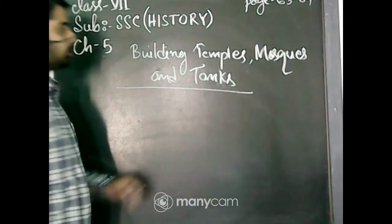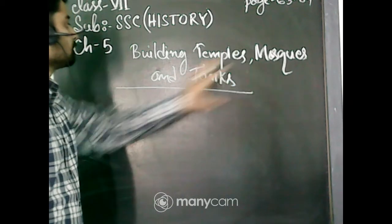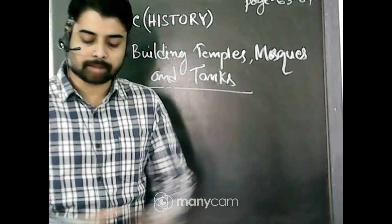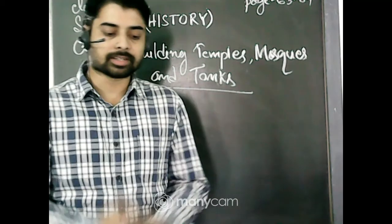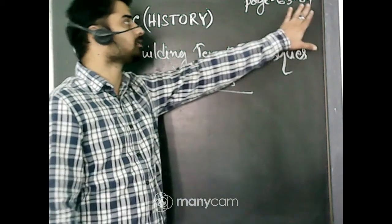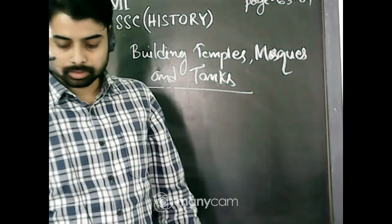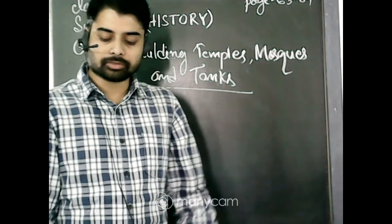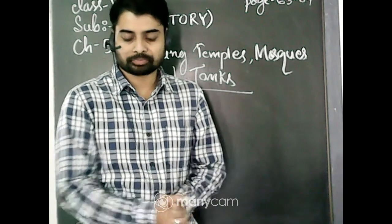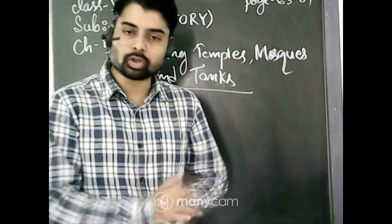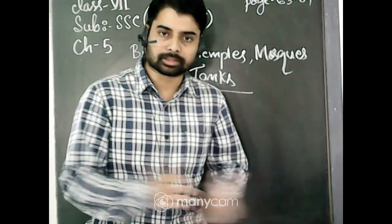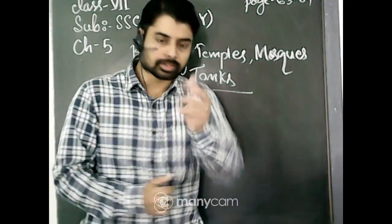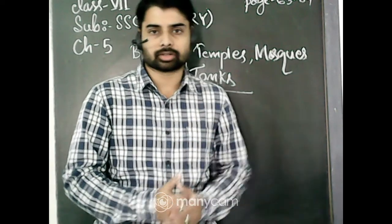At that time, why did the king build temples, mosques and tanks? The temples and mosques are beautifully constructed because they were places of worship — it is on page numbers 63 and 64 of your history book, chapter 5. They were also meant to demonstrate their power, wealth, and devotion towards their patron deity, such as the Raja Rajeshwara temple built by Raja Raja Chola.